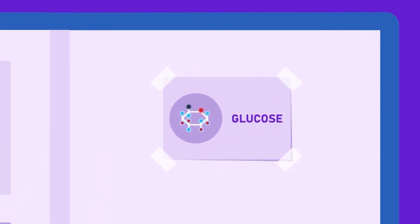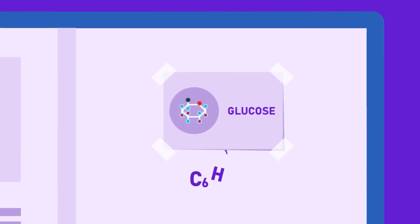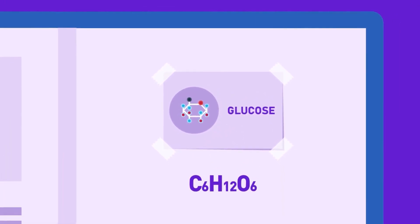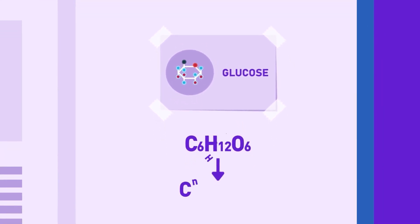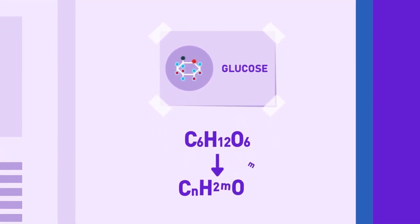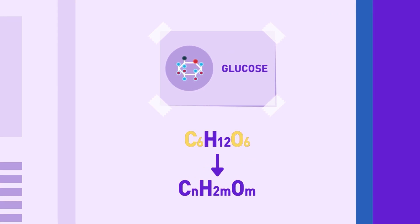The sugar glucose is one of the simplest forms of sugars and has the chemical formula C6H12O6. The generalized formula for carbohydrates is CNH2MOM. In the case of glucose, N and M are equal to 6.